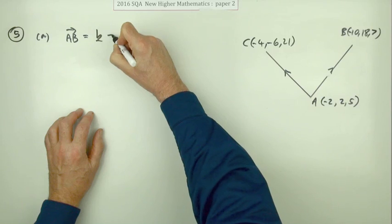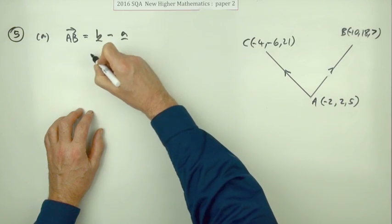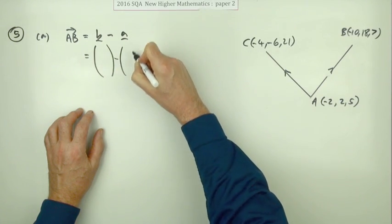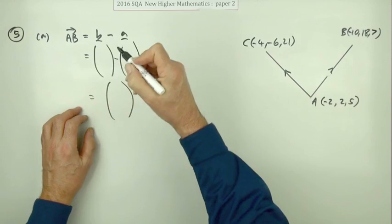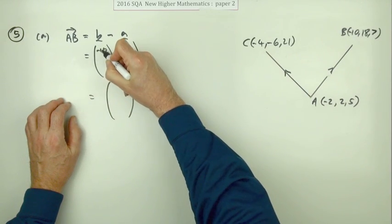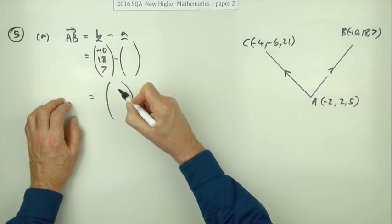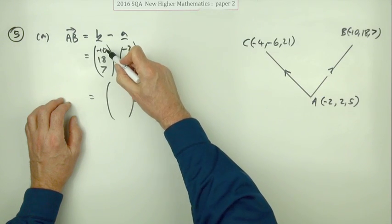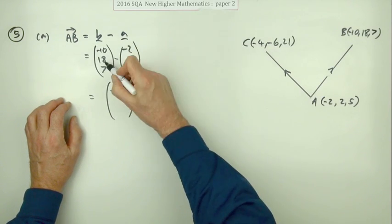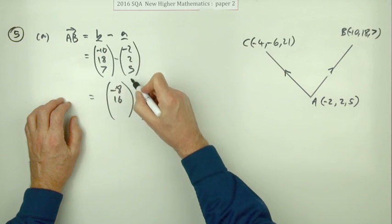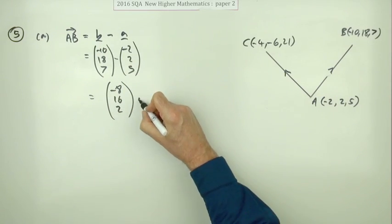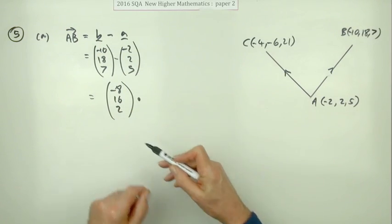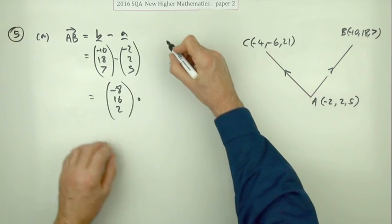Or you could spell it all out, but you're still just going to get one mark, so it's B minus A. So that's negative ten, eighteen, seven, take away negative two, two, five. And then negative ten take away negative two is negative eight. Eighteen take away two is sixteen. Seven take away five is two. And that gets a mark, but you could just have stated it by looking at the moves.